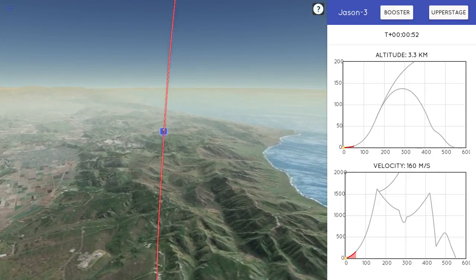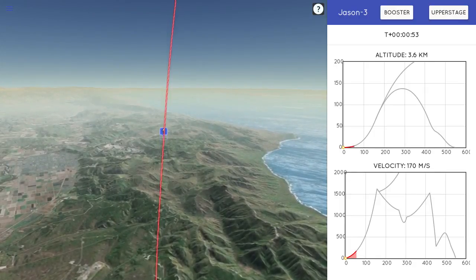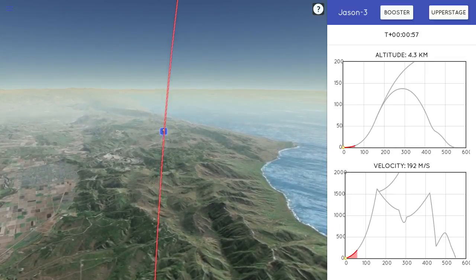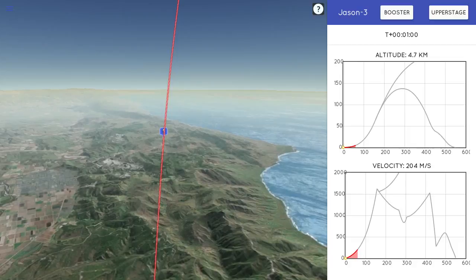And the Falcon 9 has cleared the launch pad at Vandenberg Air Force Base, delivering the Jason-3 spacecraft to a circular orbit about 300 kilometers away. Recovery platform at the US.